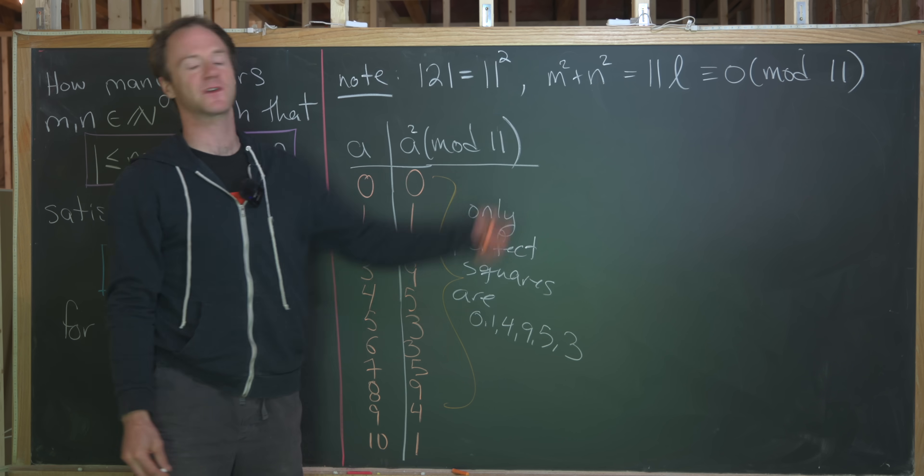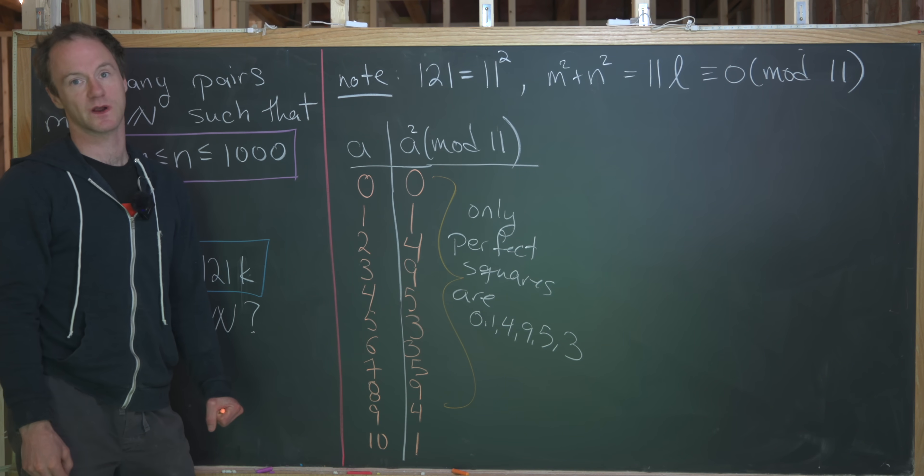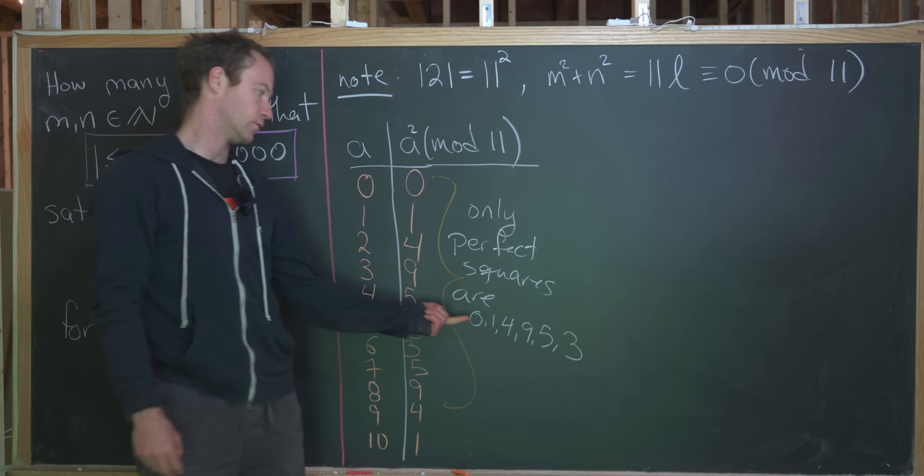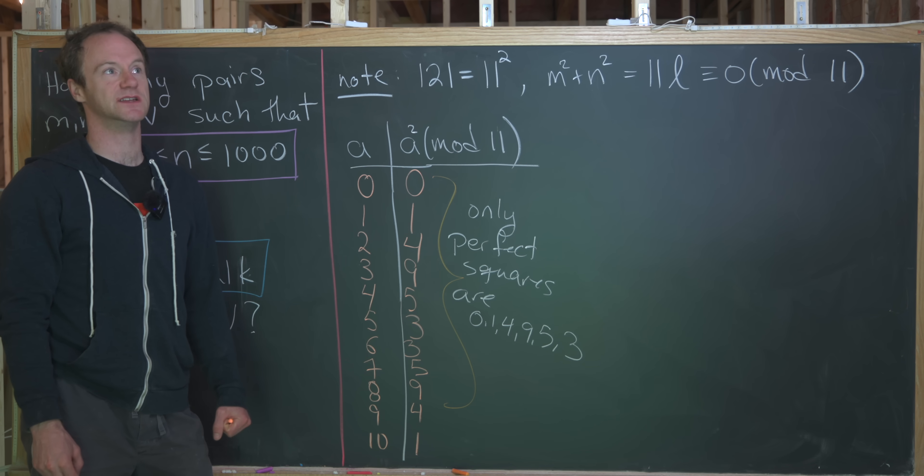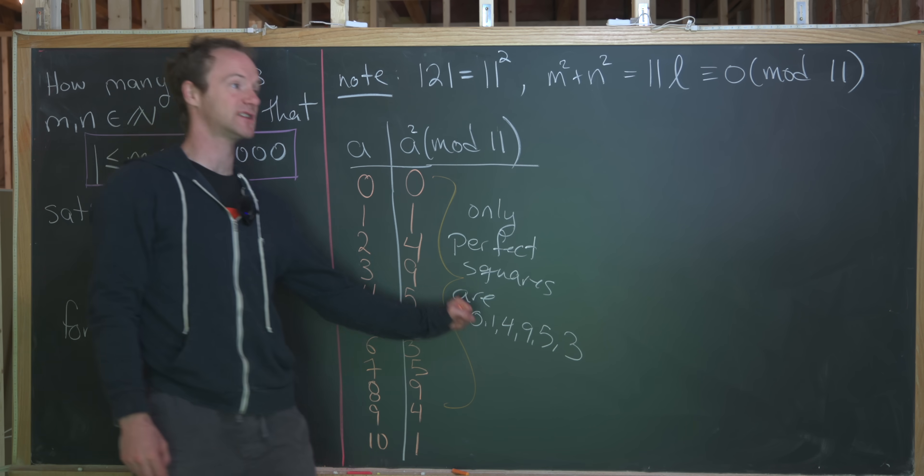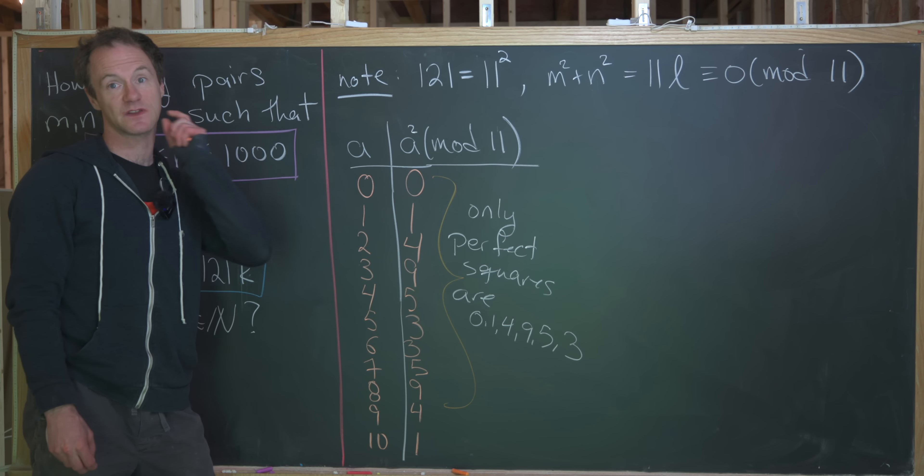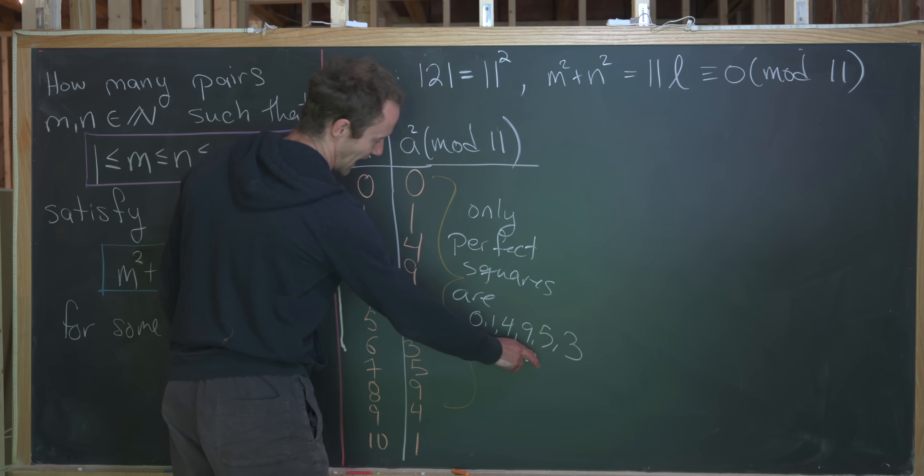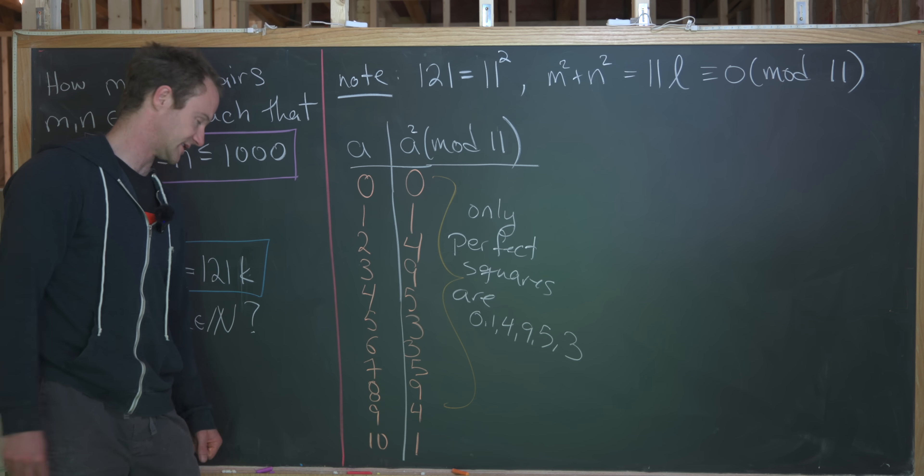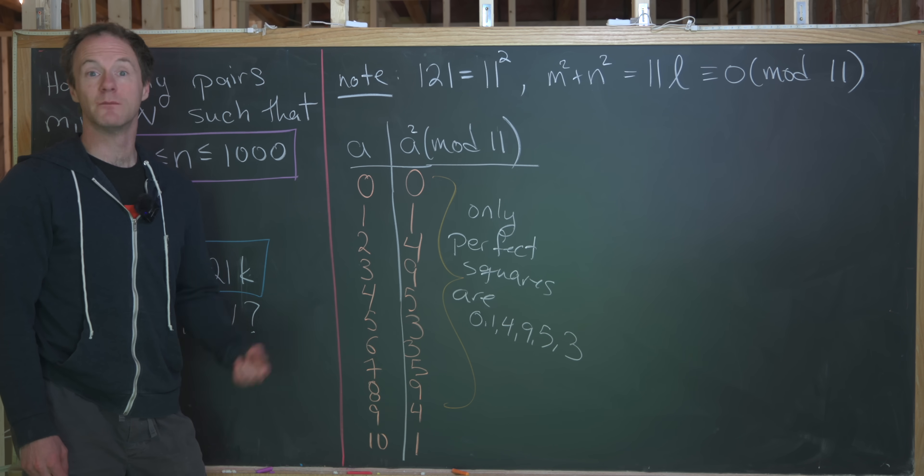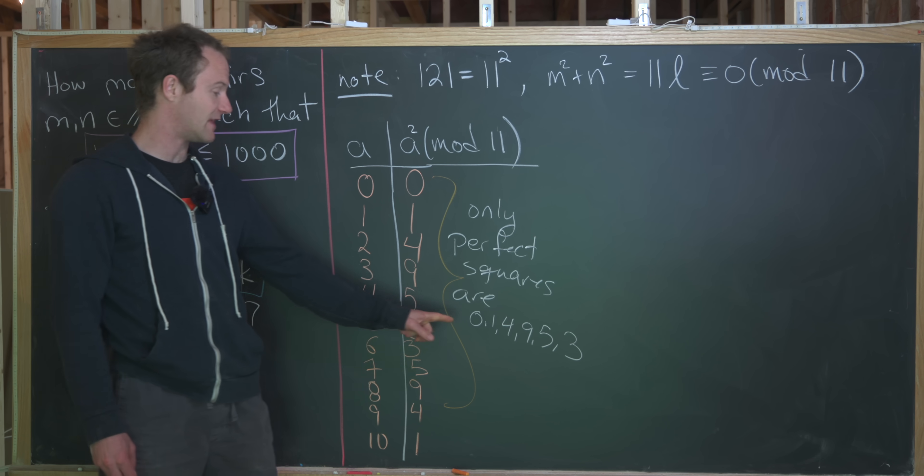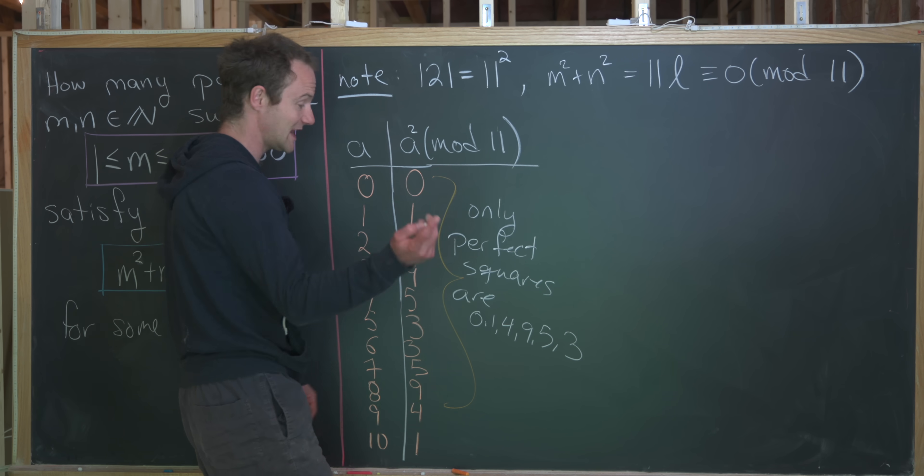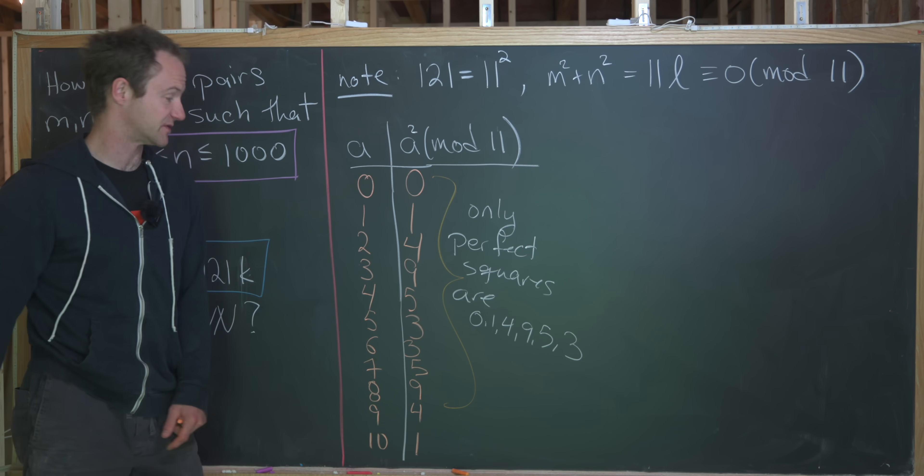We're not looking for perfect squares. We're looking for sums of perfect squares. So our question is not what are the perfect squares, but our question is how can we take sums of perfect squares and get something that is congruent to 0 mod 11. But that means we want to look at all the ways that we can take pairs of numbers from this list, add them up, and get a multiple of 11.